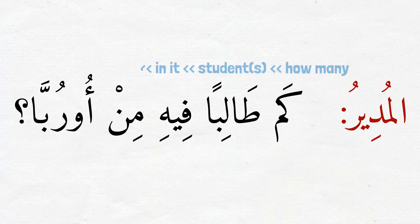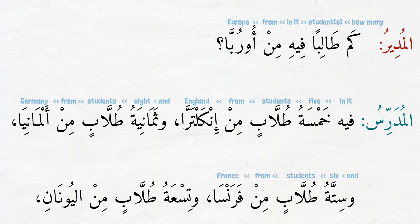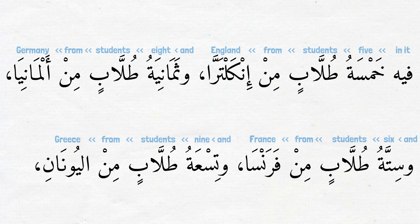المدير: كم طالبا فيه من أوروبا? — How many students in it are from Europe? The teacher responds: فيه خمسة طلاب من إنكالتر — five students from England, وثمانية طلاب من ألمانيا — and eight students from Germany, وستة طلاب من فرنسا — and six students from France, وتسعة طلاب من اليونان — and nine students from Greece.